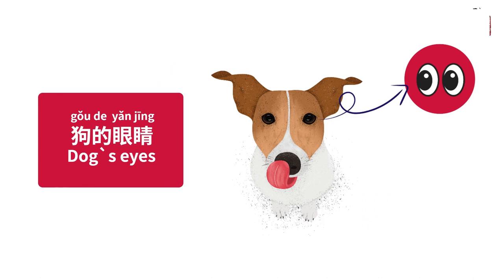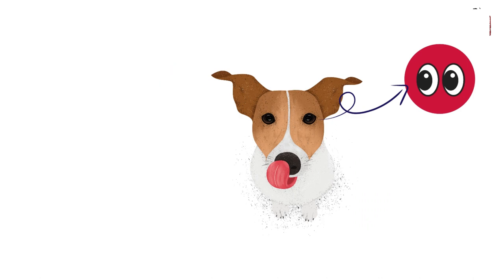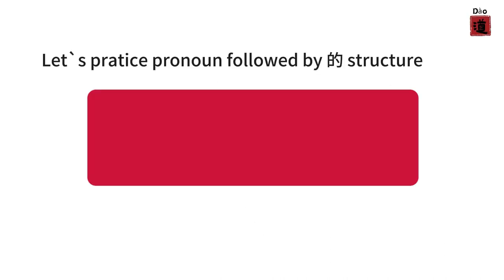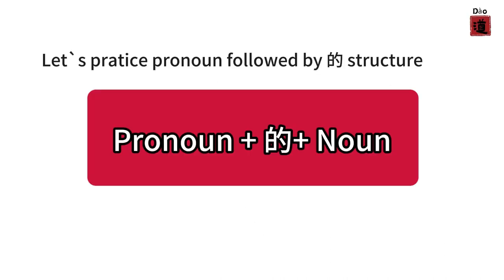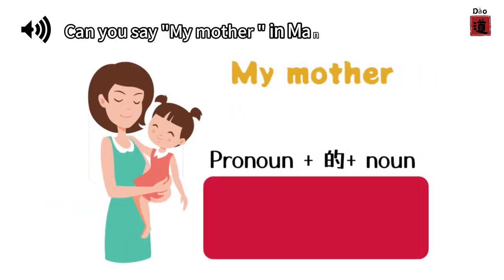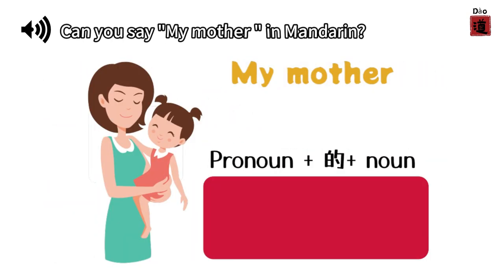Remember, the noun before 的 is the possessor. Let's practice pronouns followed by the 的 structure. Can you say 'my mother' in Mandarin?